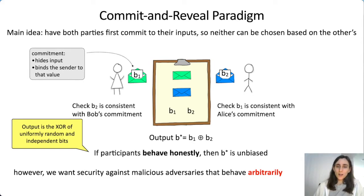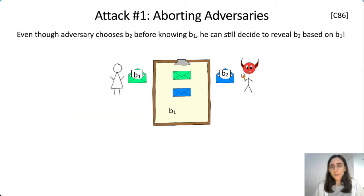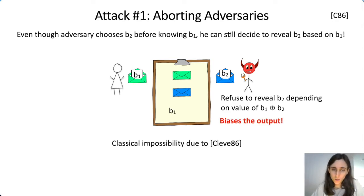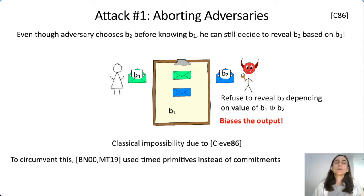The problem is that we want security against adversaries that behave however they want—in particular, that means they can abort. If Bob is the adversary and Alice has just opened her commitment to B1, Bob can look at what the output is going to be and choose to abort based on whether he likes it. This is actually a classical impossibility due to Cleve. This has been circumvented in previous work using timed primitives—replacing the commitment with a timing-based primitive to get around this aborting attack. That's the line of work we're going to follow here.